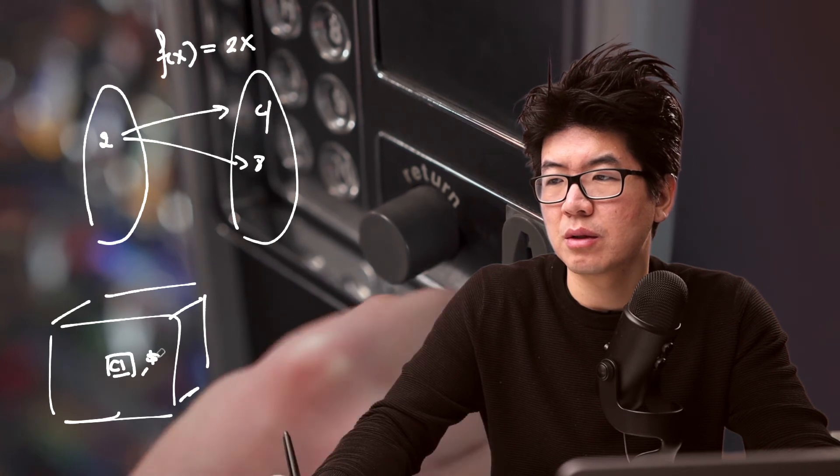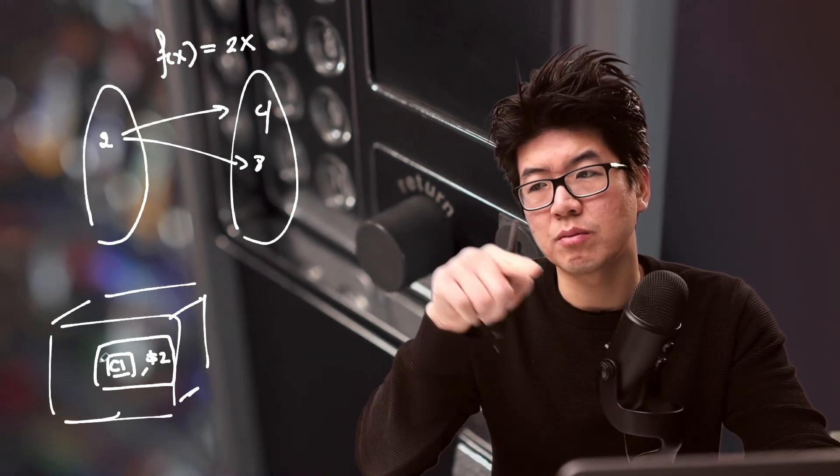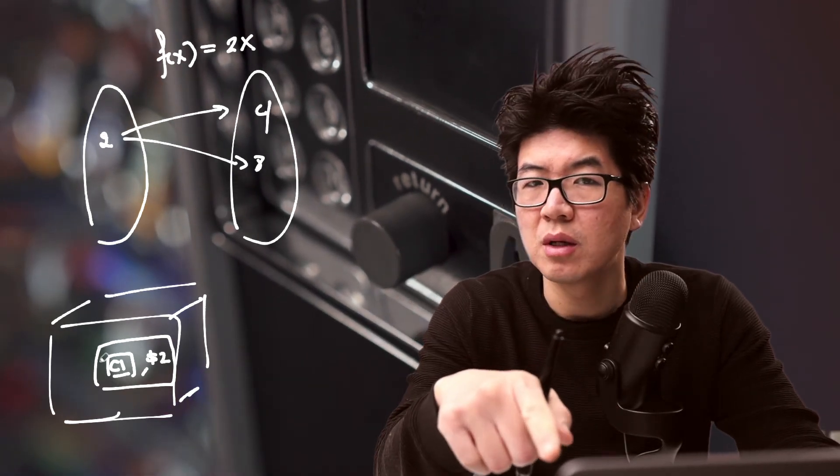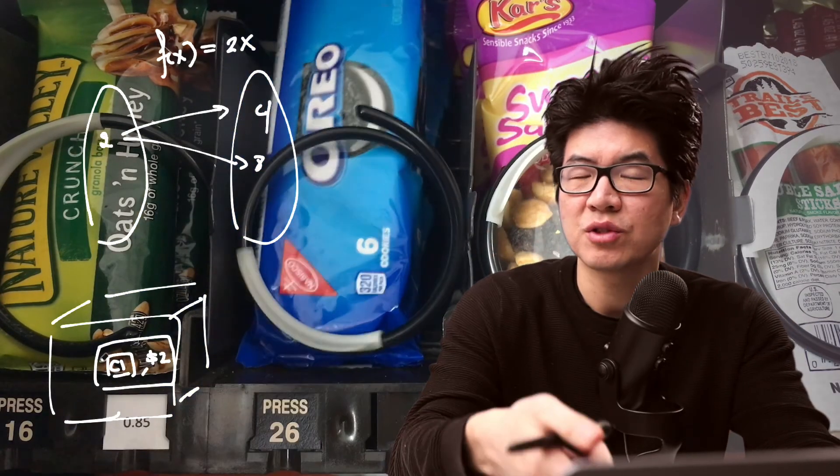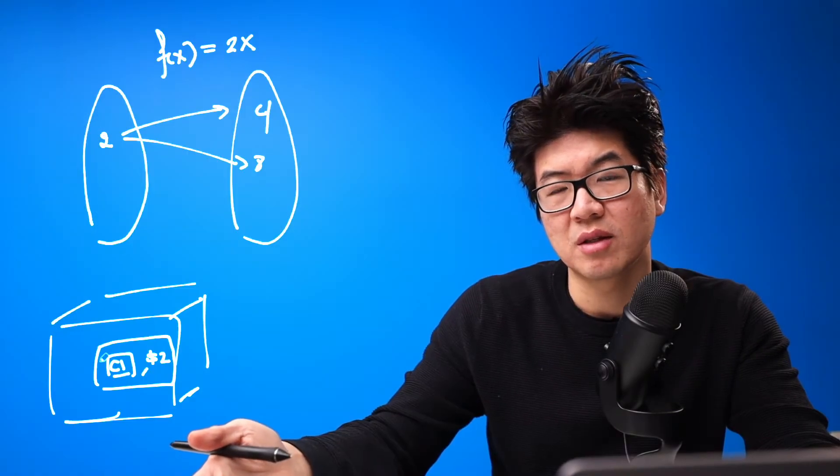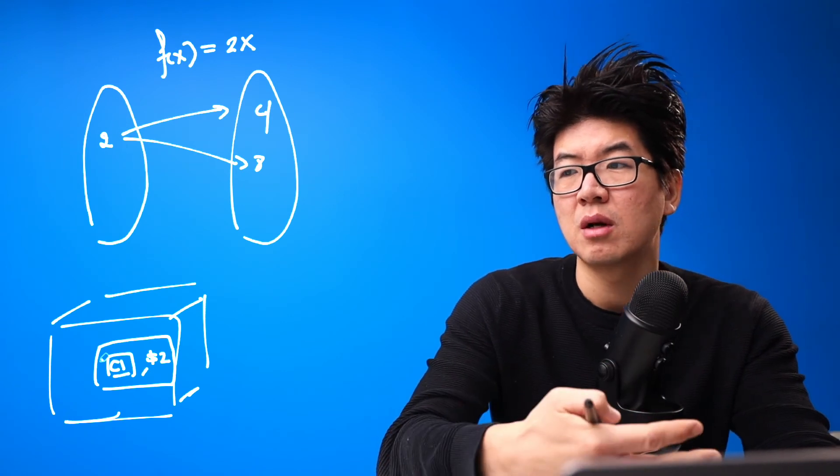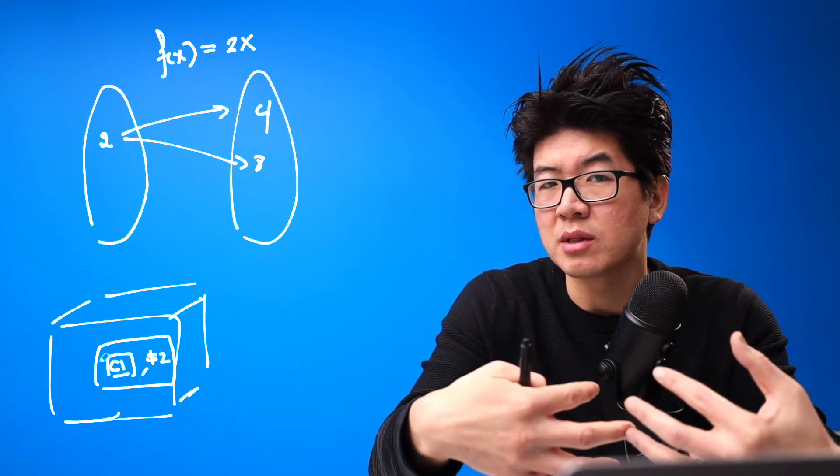The input for a vending machine is typically you press a number, maybe C1, and put two dollars in. But if sometimes it gives you that candy and sometimes it gives you a different candy, would you use this machine again? Probably not. Even like computers—if you hit the letter A, it better type in A, not do something else. That's also a function.